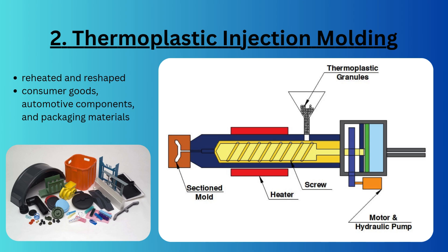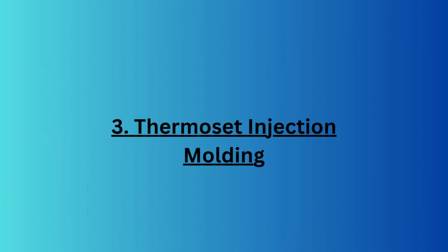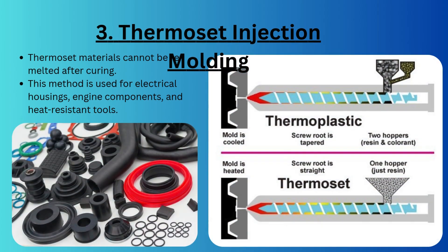Next is thermoplastic injection molding, which is the most common type. Here, we heat plastic pellets until they become molten, inject the molten plastic into the mold, cool it, and solidify it into a desired shape. The best part is that it can be reheated and reshaped — meaning it is highly recyclable. This process is generally used for consumer goods, automobile components, and packaging materials.